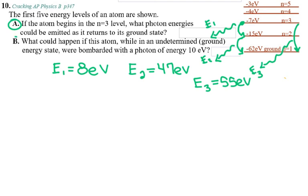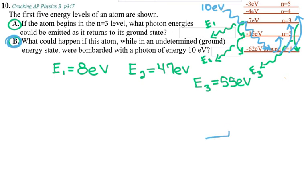For part B, they ask what happens if this atom in the ground state is bombarded with a photon of 10 eV. Looking at the energy levels, 10 eV is not enough to get from the ground level to the second level, and not enough to reach any other level. The photon energy must exactly match a transition between levels. Since 10 eV does not match any available transition, the electron stays where it is — nothing will happen.